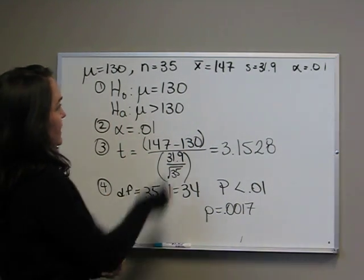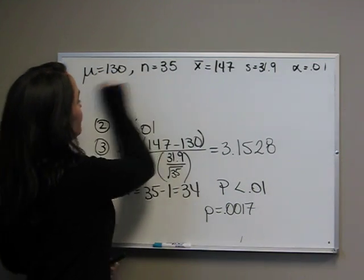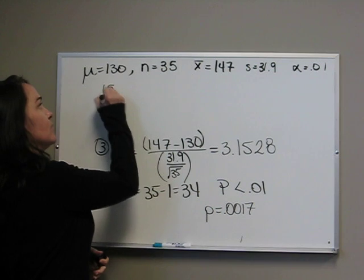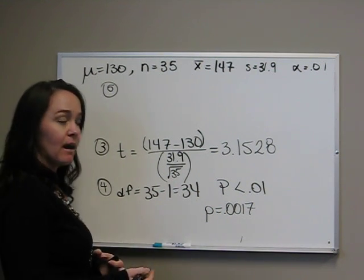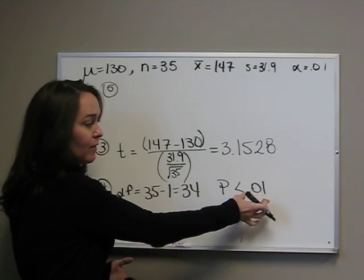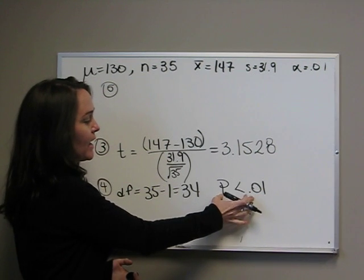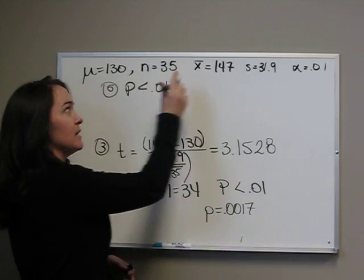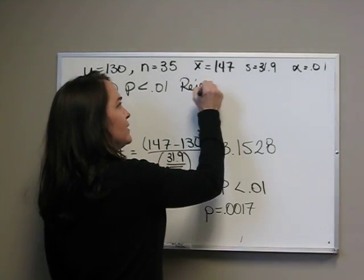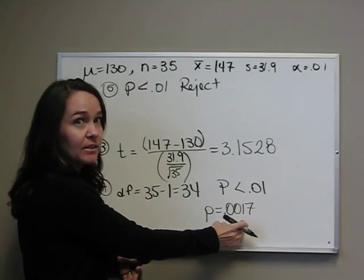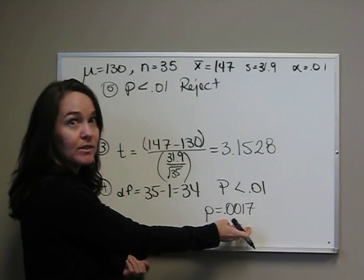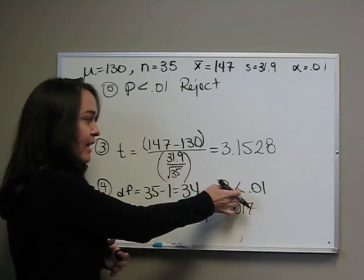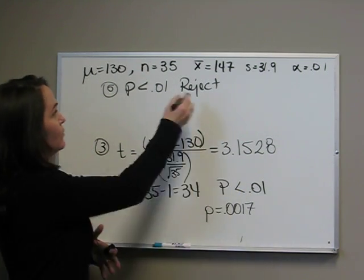Now we just have to find out if we're going to reject or fail to reject. Remember that we reject when p is less than or equal to alpha. Remember alpha is .01, and we just said that p is less than .01, because it is we reject. If you have the exact value, that is less than .01 as well. So, you don't have to have the exact value. If you know that it's just less than, then you're good. We reject.